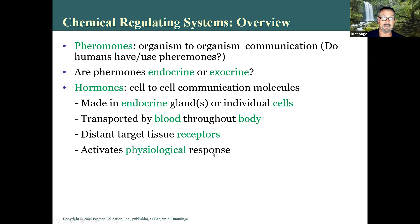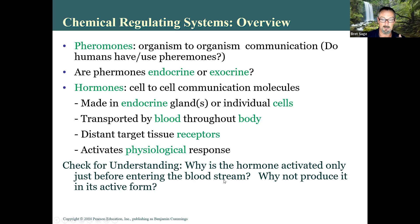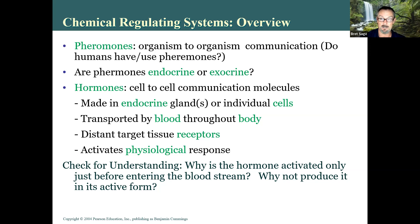Why is a hormone only activated just before entering the bloodstream? You don't want the hormone affecting the cell that made it — the target cell is a different cell. The body produces hormones in an inactive form and activates them just before release. An analogy: bombs are made in factories but not armed there — they're armed later away from the source. Similarly, these potentially dangerous molecules are only activated in the blood, so when they stick to a target cell, the chemical reaction happens in the right place.